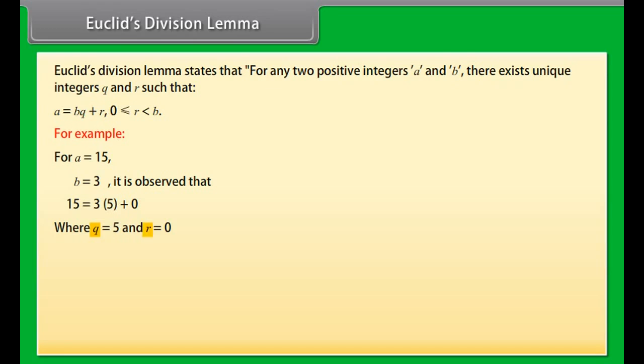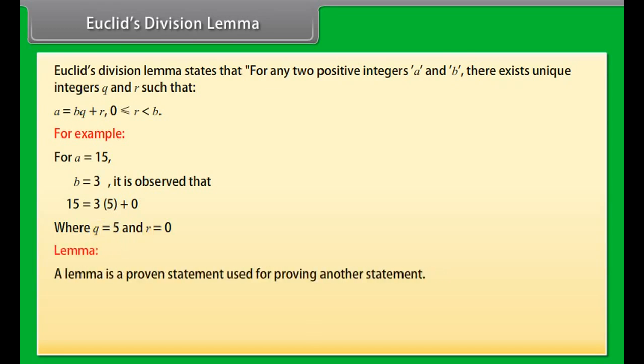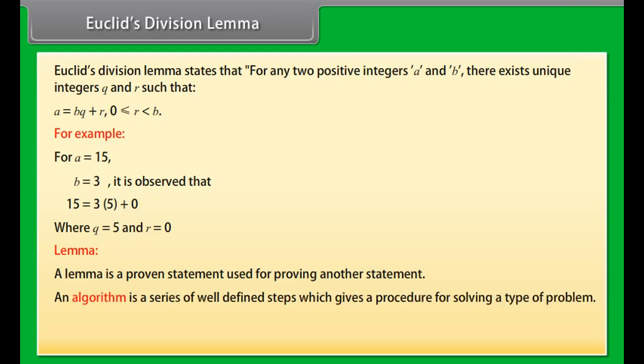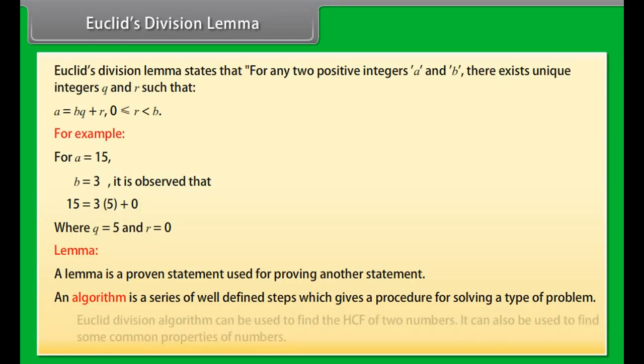A lemma is a proven statement used for proving another statement. An algorithm is a series of well-defined steps which gives a procedure for solving a type of problem. Euclid's division algorithm can be used to find the HCF of two numbers, and can also be used to find some common properties of numbers.